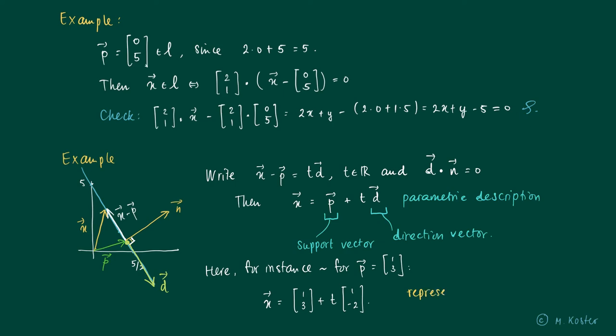So it's important to notice that this representation is not unique. So for any different support vector p, we get a different description of the line. But if you vary over all t, we get the same line back.